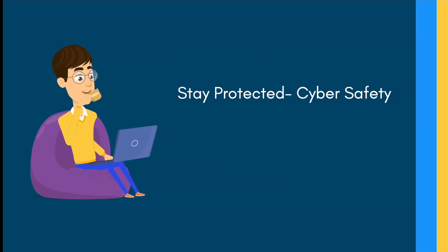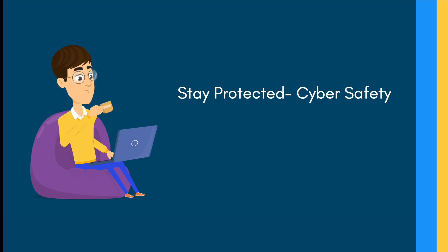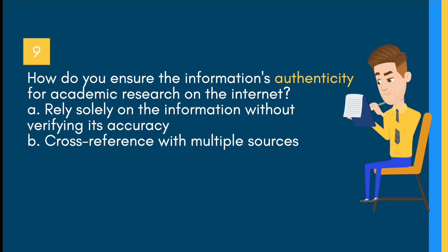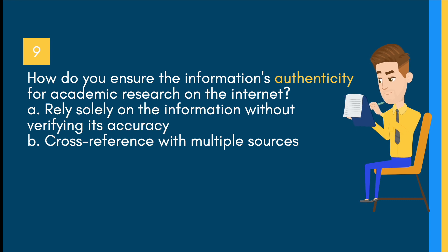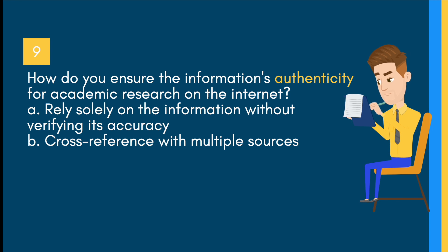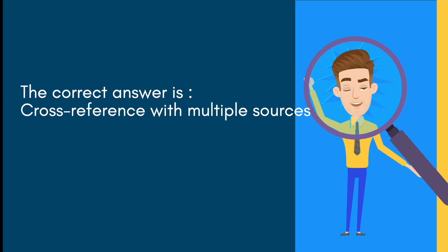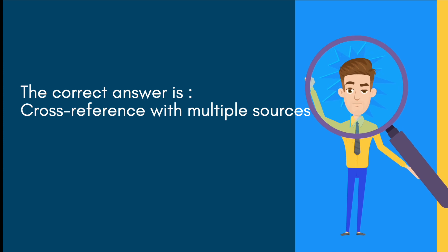Stay protected — cyber safety. How do you ensure the information's authenticity for academic research on the internet? A) Rely solely on the information without verifying its accuracy, B) Cross-reference with multiple sources. The correct answer is: cross-reference with multiple sources.